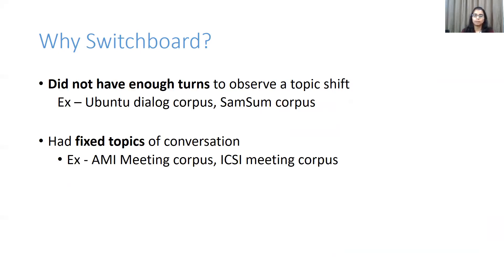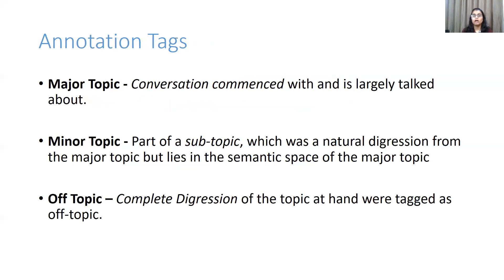The Switchboard corpus has a topic prompt given at the beginning of the conversation between the two users. For the purpose of our study, we label that prompt as the major topic of the conversation, and utterances digressing from that are labeled as minor or off-topic. Utterances are tagged in a bracketed manner into these three classes. Those belonging to the initial topic are labeled as major topic, and each conversation has a solitary major topic. Utterances that are part of a subtopic — a natural digression lying in the same semantic space as the major topic — are tagged as minor topic. A conversation can consist of multiple minor topics.